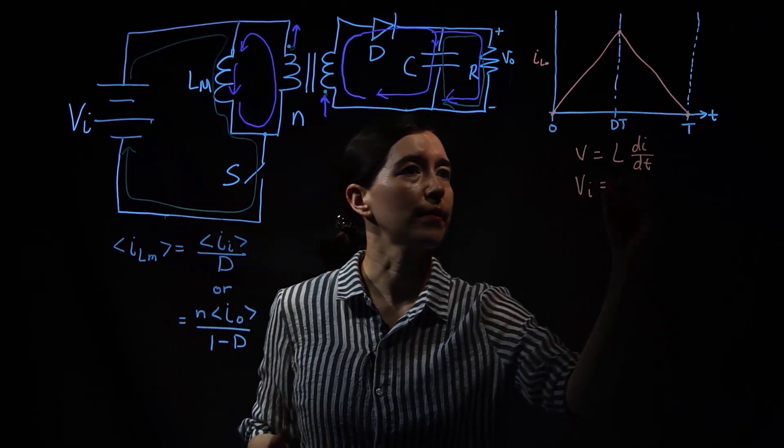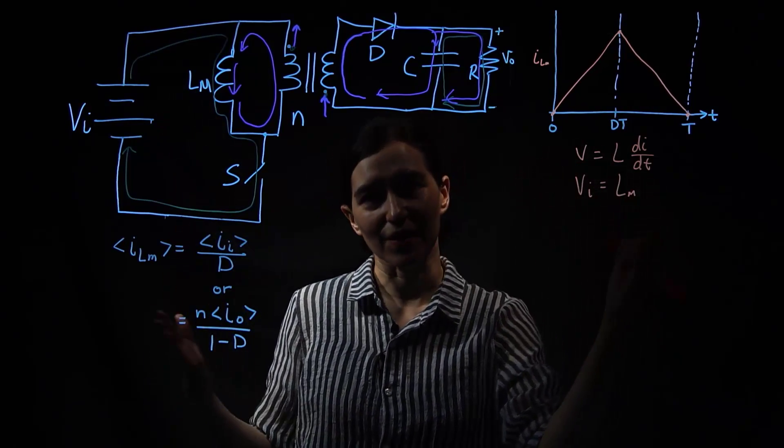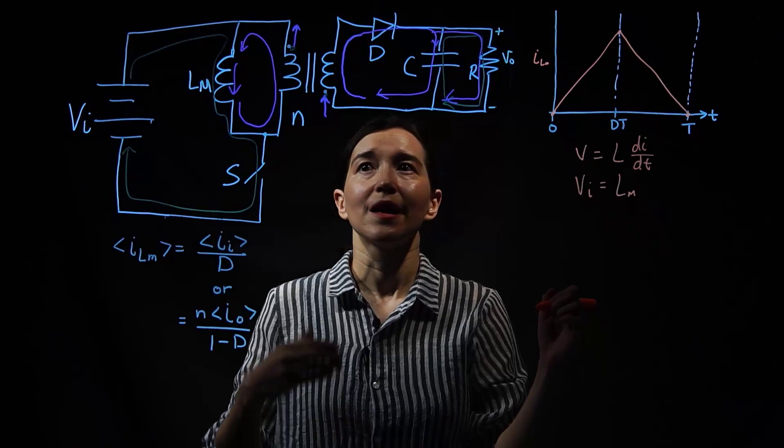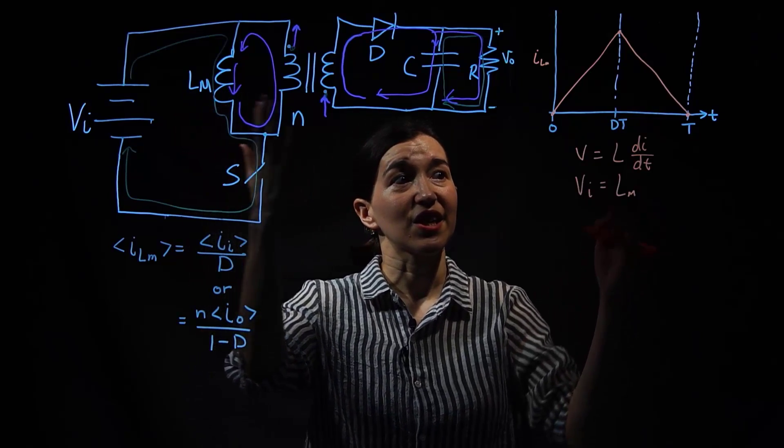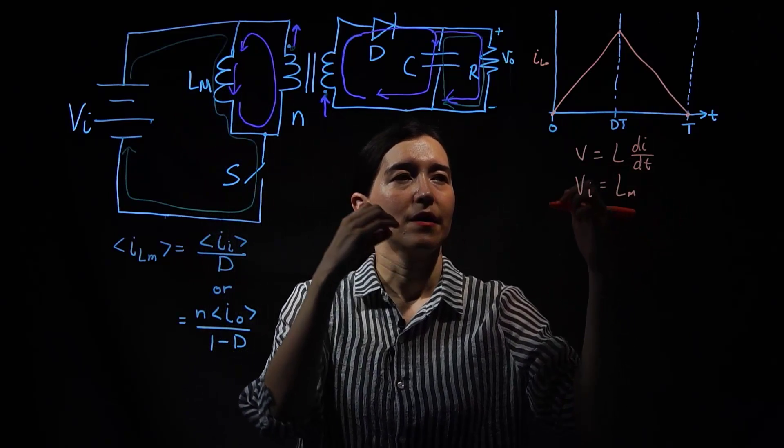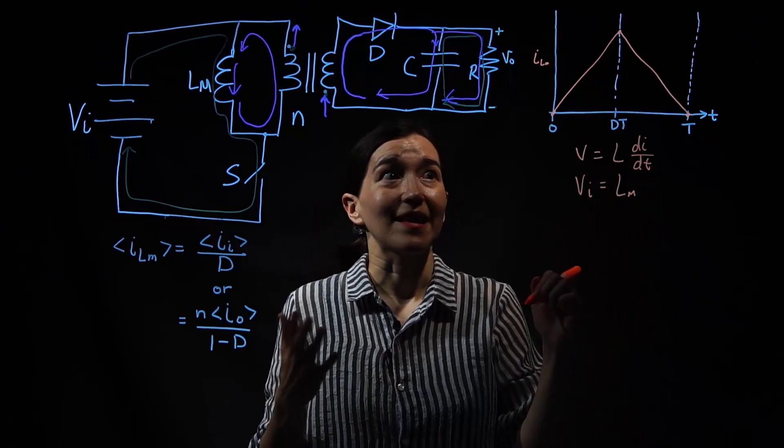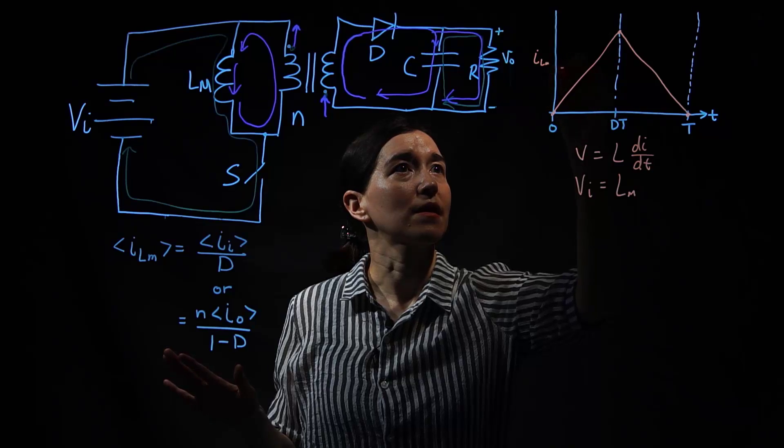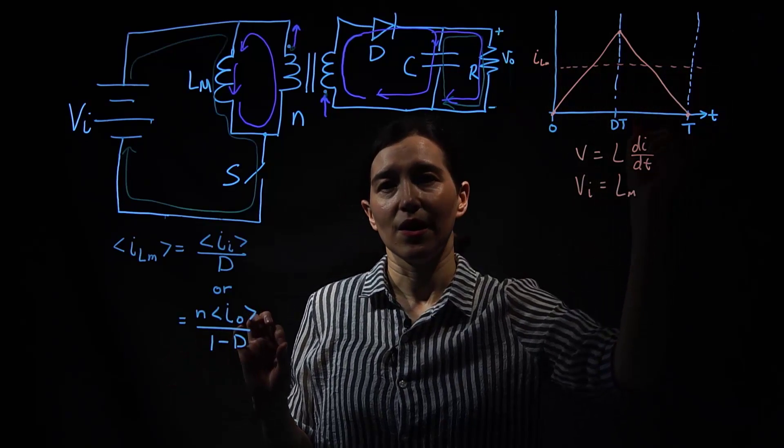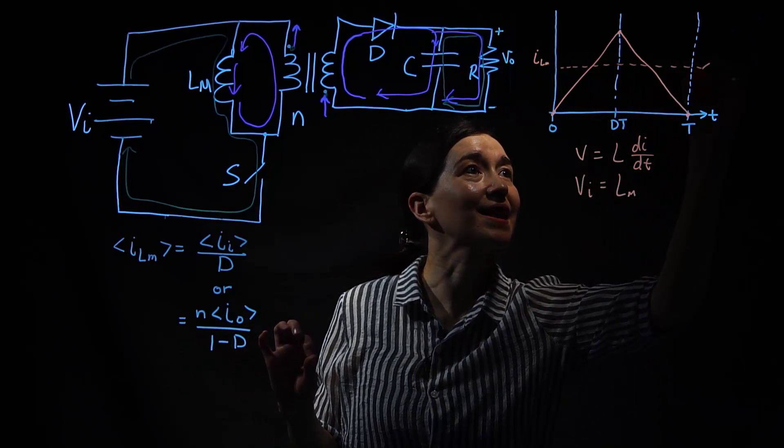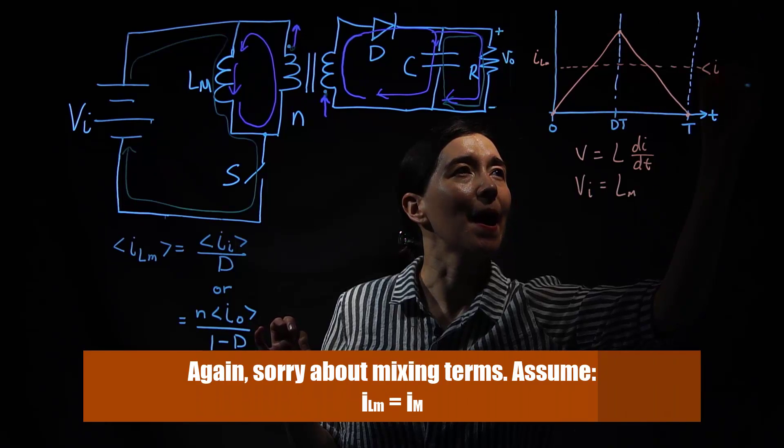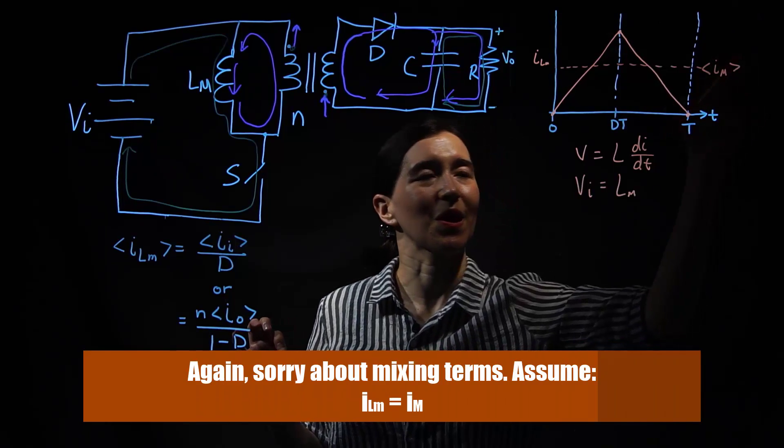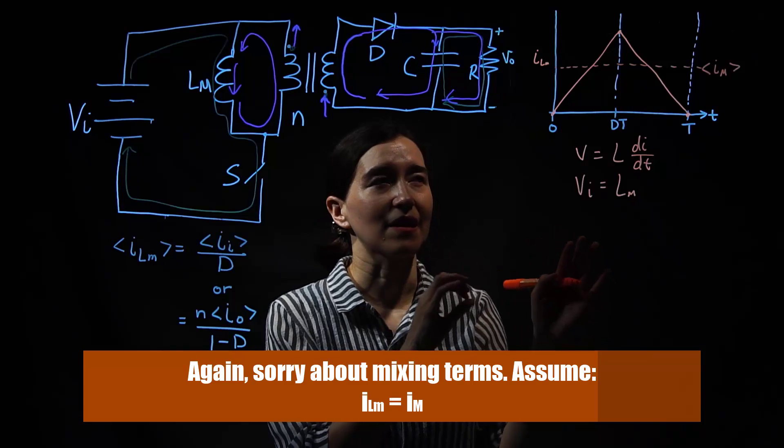The inductor value L and I'm going to put a little m because it's a magnetizing inductance. And now we want to look at the change in current. Okay, so what is that going to be here? The average value here is going to be the average Im, the average magnetizing current.